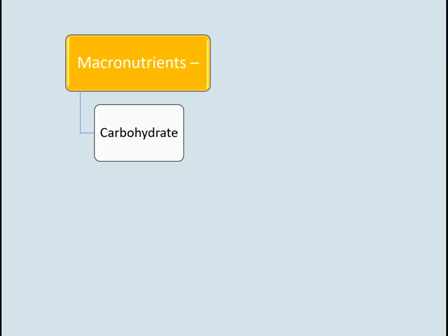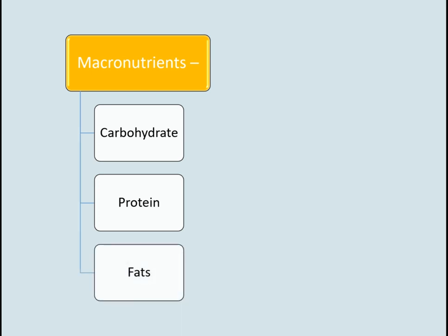Sugar and starch are examples of carbohydrates. Proteins are the building blocks of our body and are required for the structure and regulation of the body's tissues and organs.